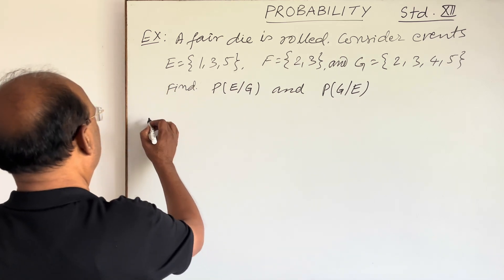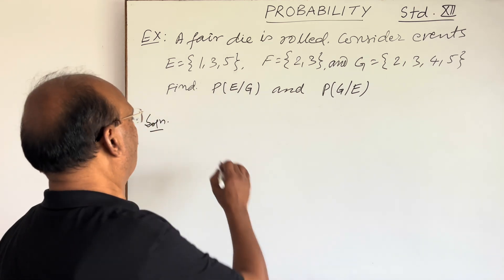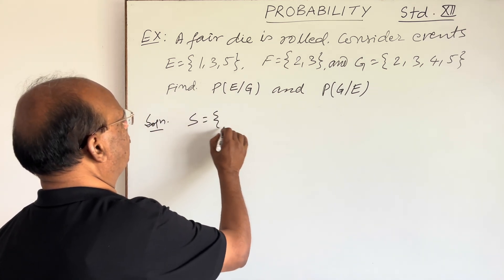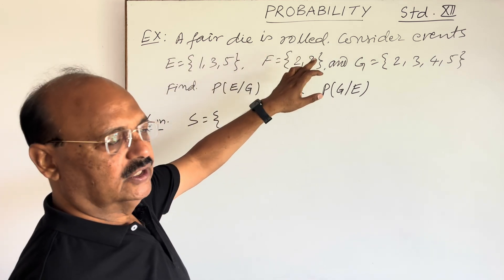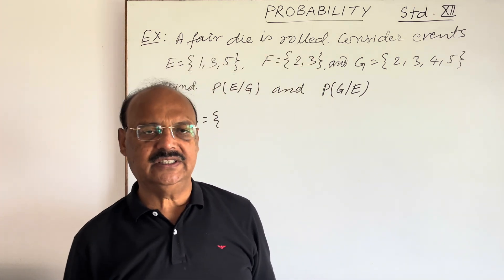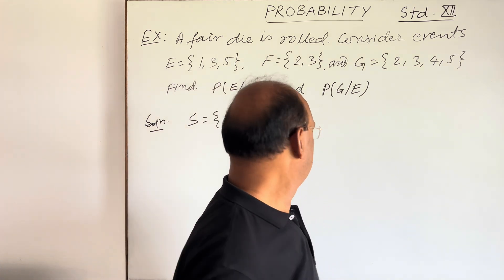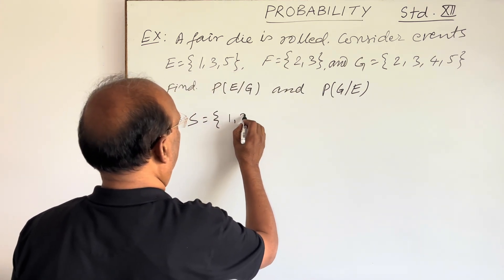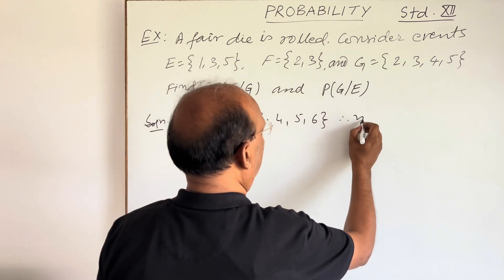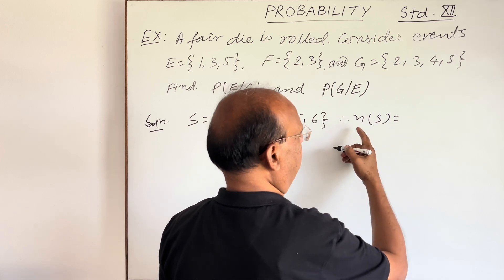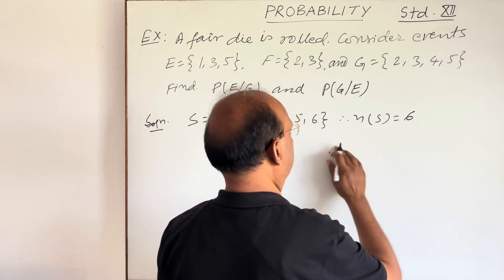So this is very interesting. What will be the sample space here? We can get the sample space with the help of this statement — a fair die is rolled. As we know, a die has 6 faces, numbered 1, 2, 3, 4, 5, 6. So the elements are 1, 2, 3, 4, 5, and 6. Therefore, N(S), the number of elements in the sample space, is 6.